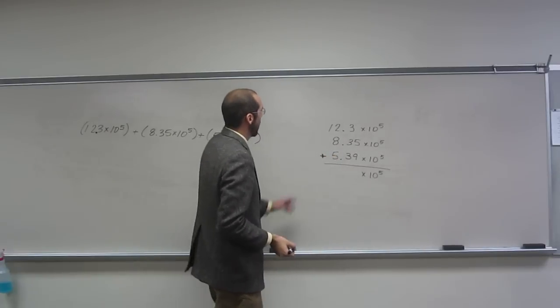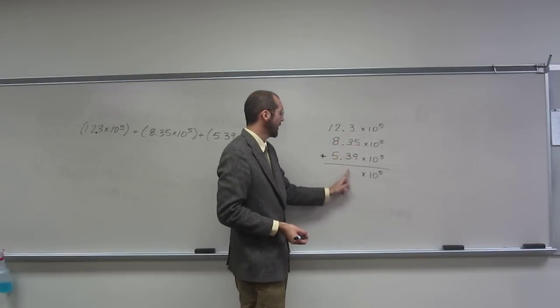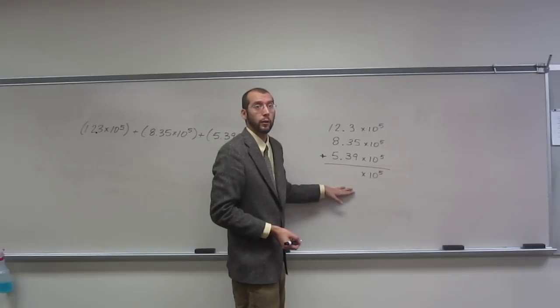So when we do this we have to realize that this one only has one behind that decimal. These have two, so the answer is only going to have one behind the decimal.